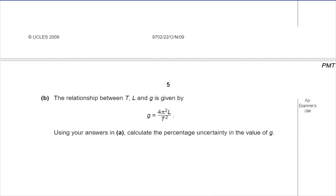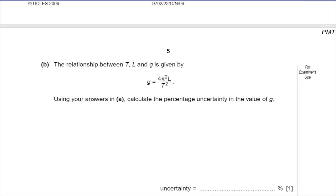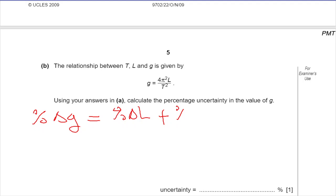The relationship between T, L and G is given by G = 4π²L / T². Using your answers in A, calculate the percentage uncertainty in the value of G. The percentage uncertainty in G is going to be equal to the percentage uncertainty in L plus the percentage uncertainty in T. But T is squared, so its uncertainty is multiplied by 2.